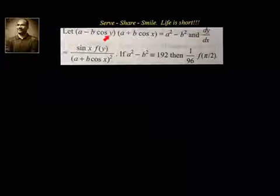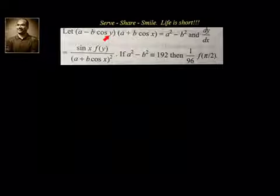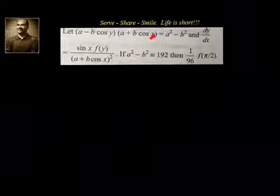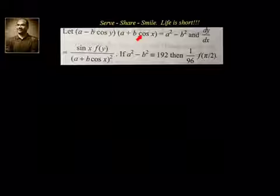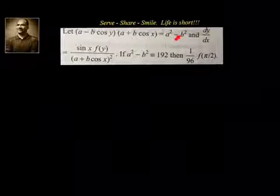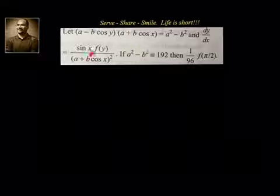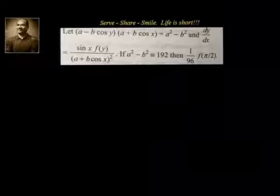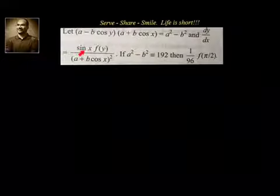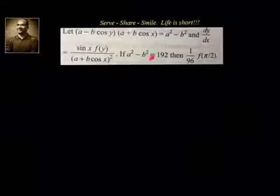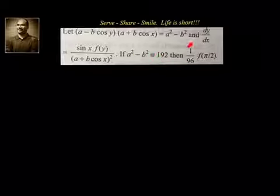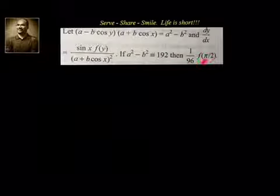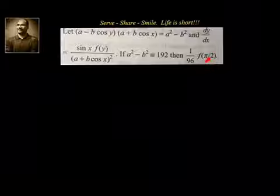Let (a minus b cos y) into (a plus b cos x), the product of them, equal to a squared minus b squared. And dy/dx equals sin x into f(y) divided by (a plus b cos x) whole square. If a squared minus b squared equals 192, then what is (1/96) into f(π/2)?